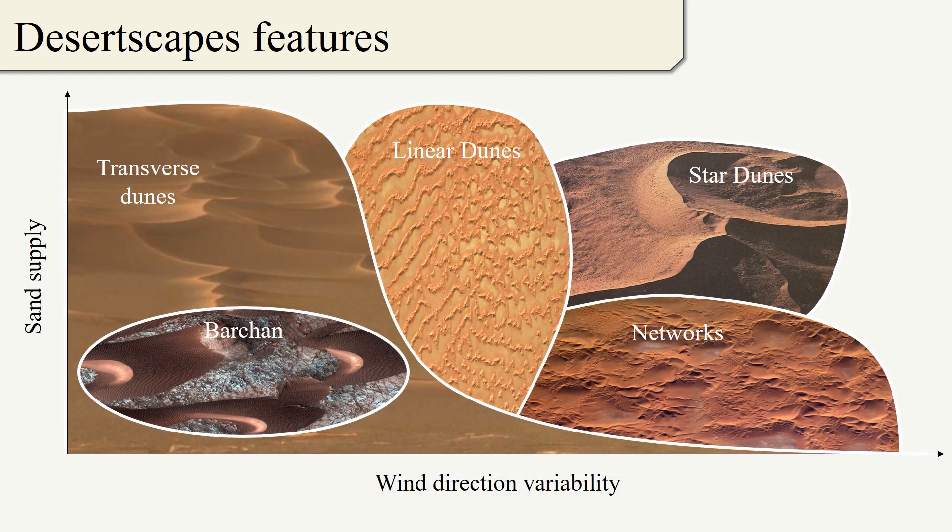Wind and sand transport are the main processes that shape various desert features, such as transverse dunes, barchan dunes, or star dunes.